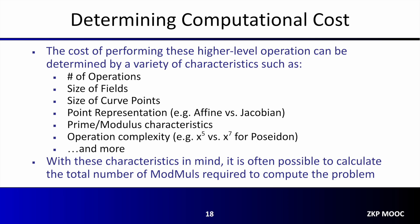Finally, there are a variety of other smaller factors that may contribute to performance, including the representation of the curve points and whether the modulus has a unique structure that enables faster reduction. Once all of these parameters are determined, the number of modular multiplications required to perform a proof can easily be calculated. With this number in hand, it can then be compared to the model performance of a given hardware platform to derive a performance estimate or calculation time.